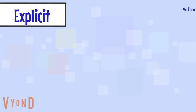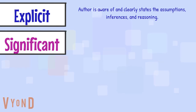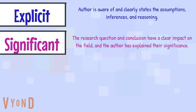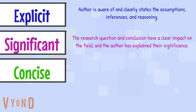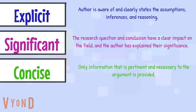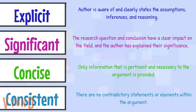Some characteristics of a well-crafted argument are: being explicit, where the author is aware of and clearly states the assumptions, inferences and reasoning that connect the different parts of the work together. It should be significant, where the research question and conclusions are not trivial but have a clear impact on the field and the author has explained their significance. It should be concise, where only information that is pertinent and necessary to the argument is provided. And it should be consistent, with no contradictory statements or elements within the argument.